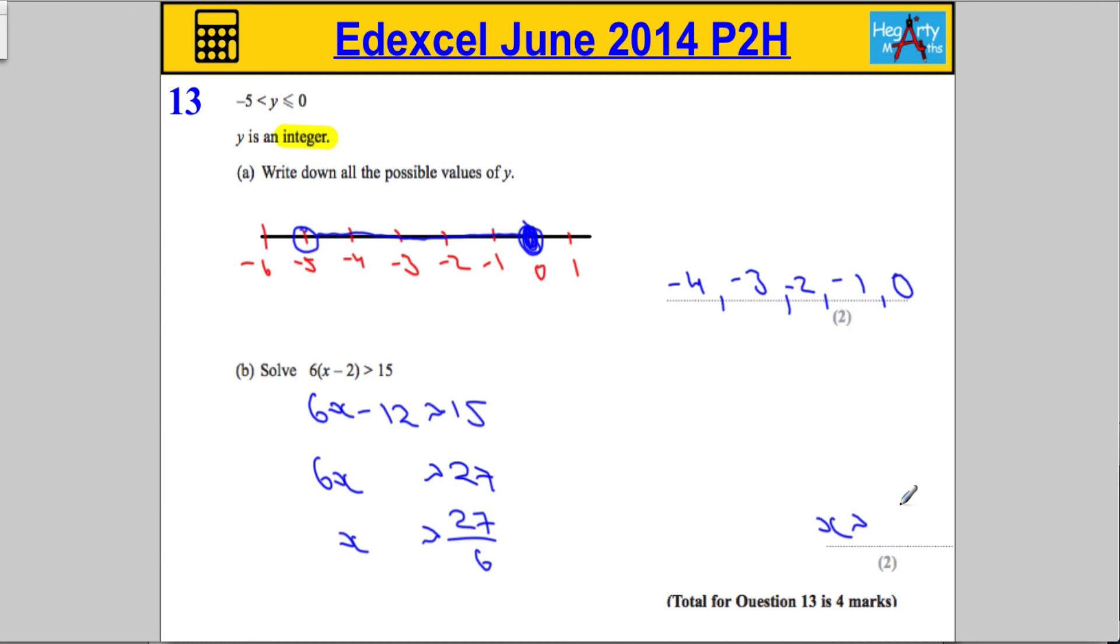If you simplify that, 6 is going to go in 4 times, remainder 3, so it's going to be 4.5. x is bigger than 4.5, but that's a perfectly acceptable answer also. Just beware, if you put an equals here, you may lose a mark. If it's an inequality, make sure you keep that inequality symbol.